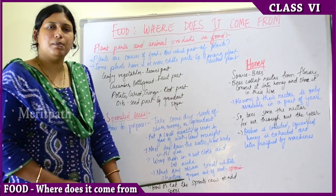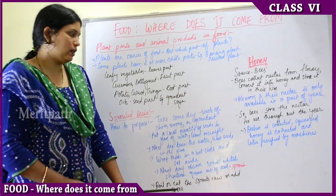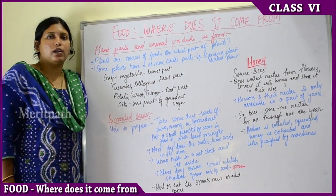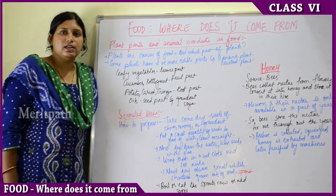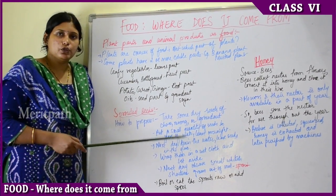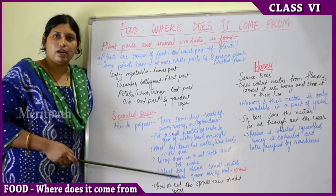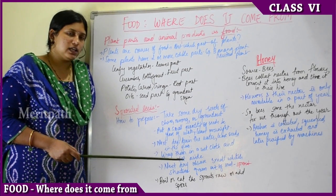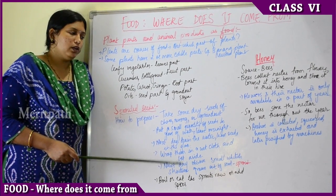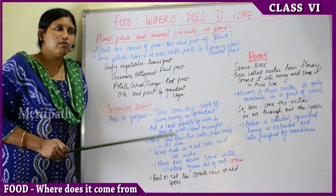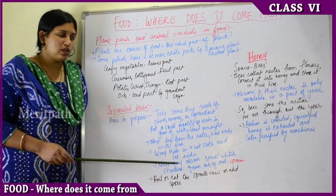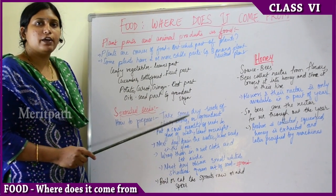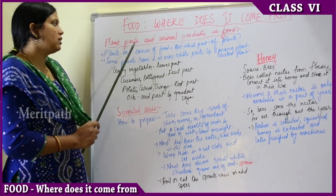To summarize the method: soak dry seeds of any dal or groundnut in a glass of water for one whole night, then throw away the water and retain the seeds, wrap them in a wet cloth for one day. Next day you will see whitish growths — those are sprouts. The source of sprouts is seeds, which is a plant part.